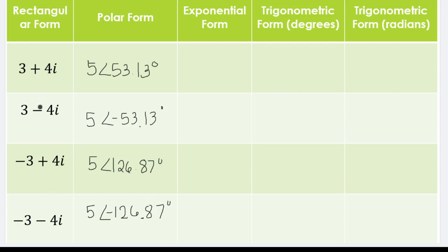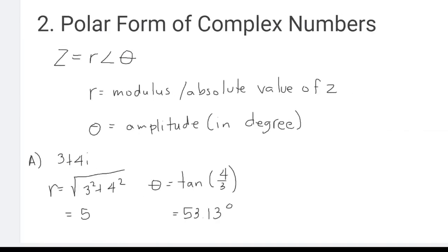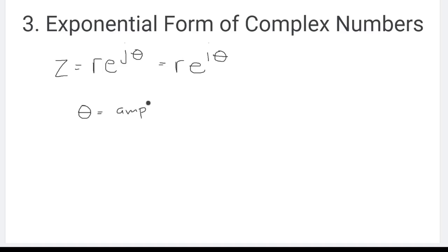That's how we convert from rectangular to polar form. Now, how do we convert from rectangular to exponential form? In exponential form, C is equivalent to R·e^(jθ) or R·e^(iθ) — these two are used interchangeably, though j is mostly used in electrical circuits. The R is the same modulus from the polar form. You just need to convert theta into radians. Your calculator must be set to radians mode.